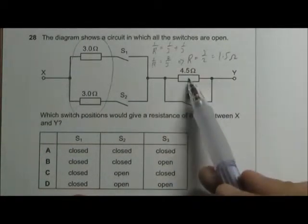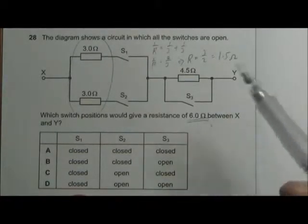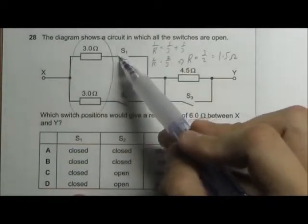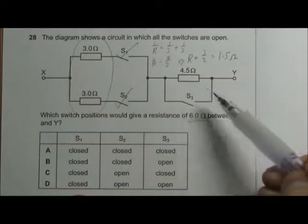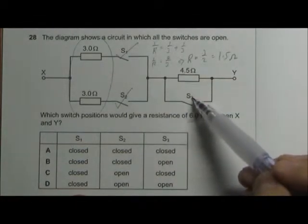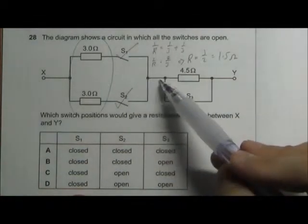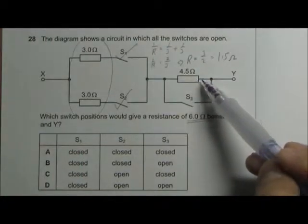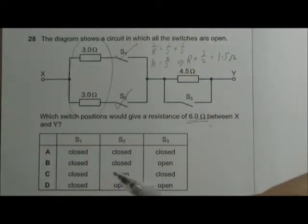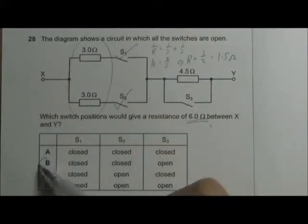And since this 1.5 ohm is in series with this 4.5 ohm, we add them up and it will give us 6 ohms in total. So in this case, we have to close S1, S2, and we have to leave S3 open so that the whole current will pass through the 4.5 ohm resistor. So the answer should be closed, closed, open. Answer B.